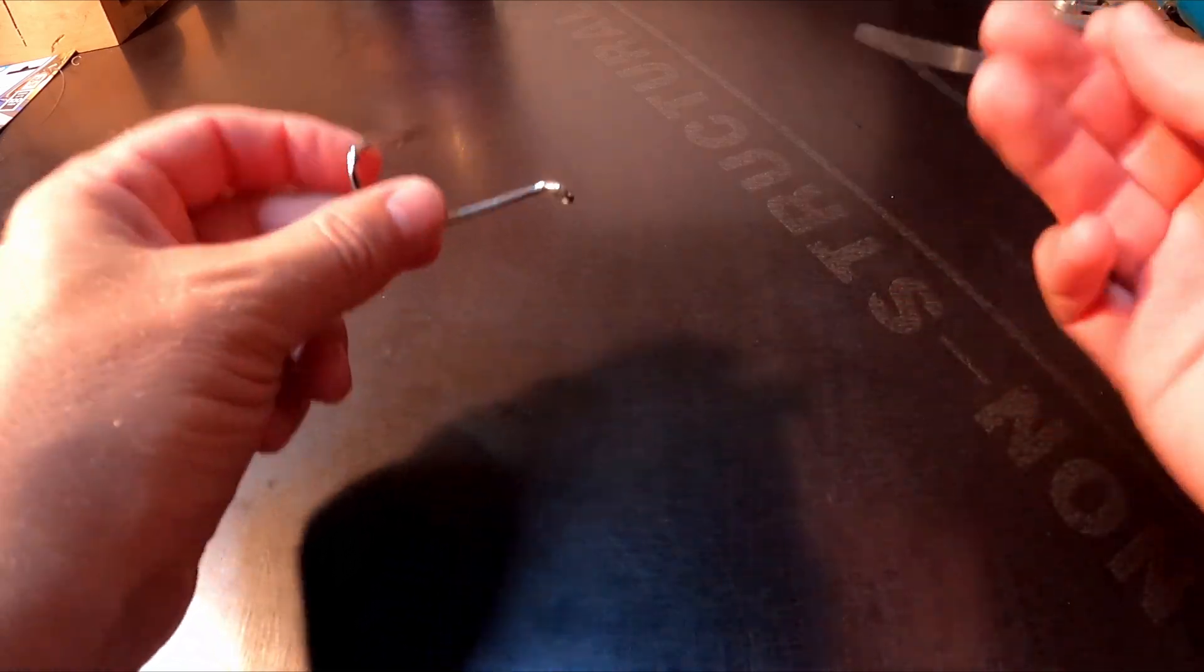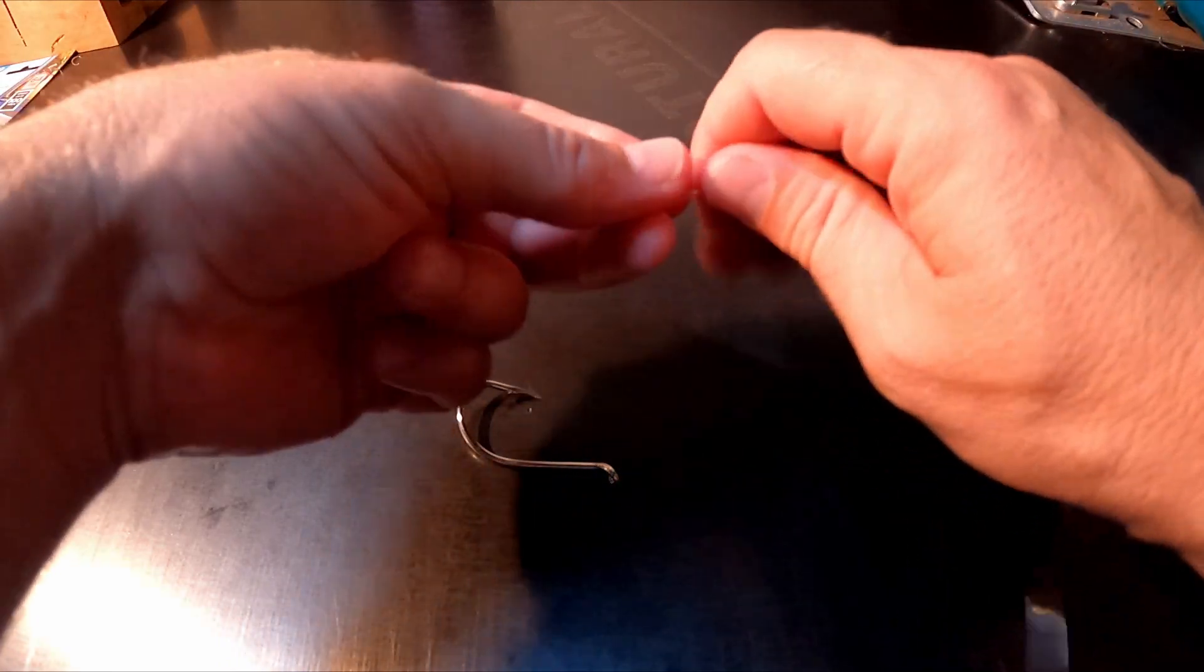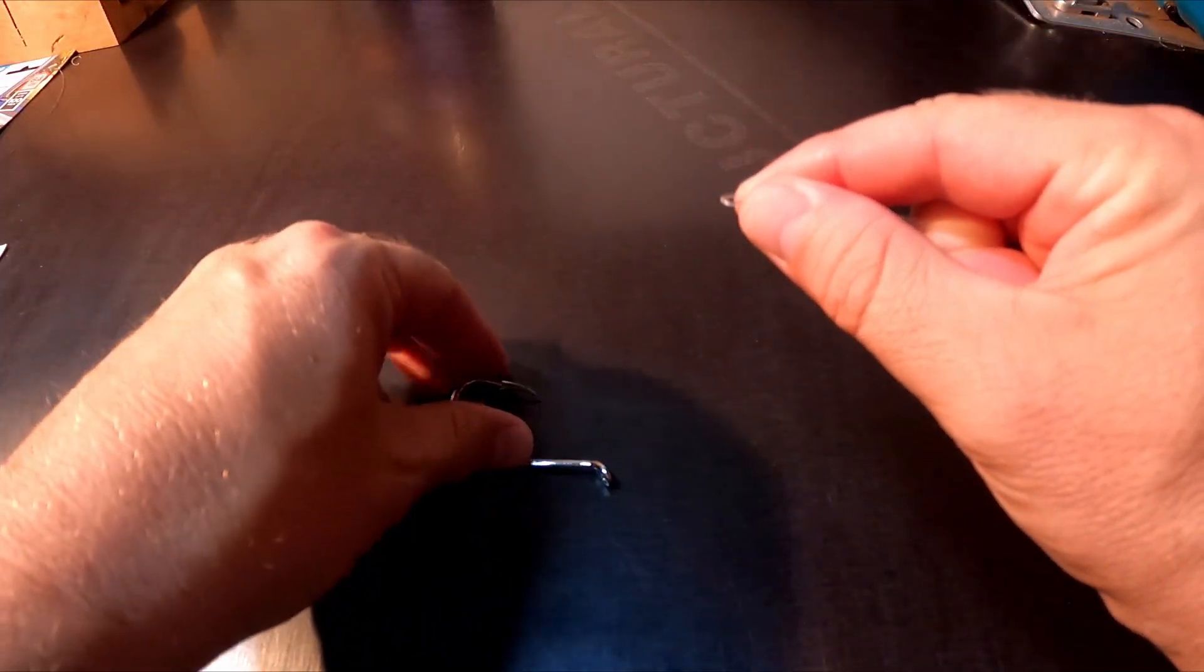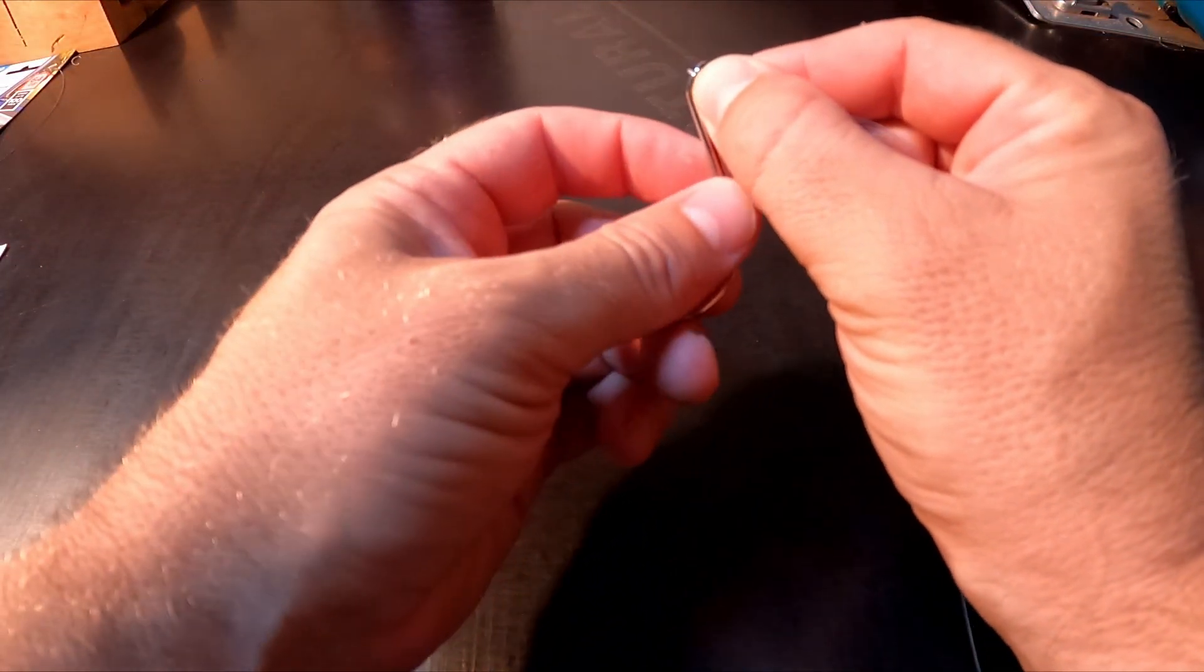First step: you've got your hook, your line, you want to double your line over. Double it over, create a little loop and pinch that. You want to pass that through the eye of the hook.